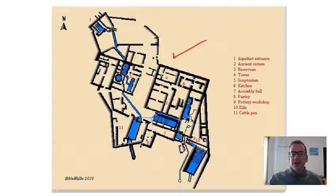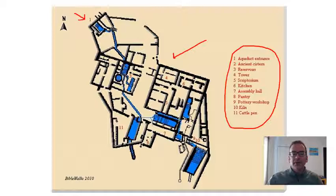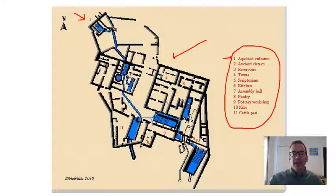Looking at the site diagram, number one is the aqueduct entrance — the water supply. Qumran is up on a hill, so they needed a way to store water. The aqueducts brought water in and filled a series of cisterns. Number two is a cistern. You can see how all of these are connected through various tunnels and pools — water was clearly very important to this community.